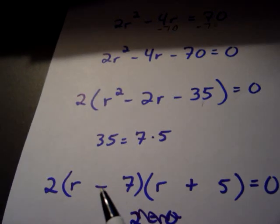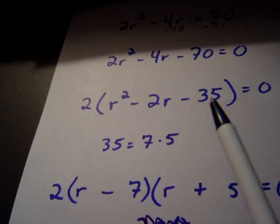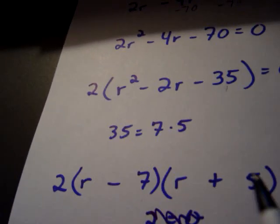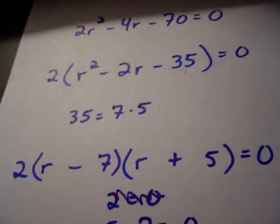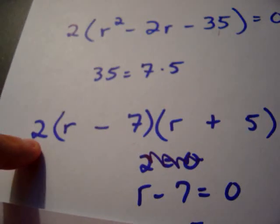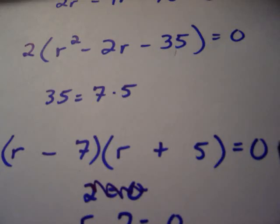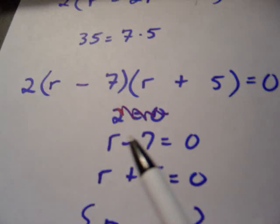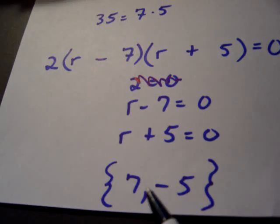You might ask how we decided which factor gets the negative and which gets the positive. The only way to get negative 35 is if one is negative and one is positive. To get negative 2 as the middle term, the larger absolute value must be negative, so the minus goes in front of the 7. Now, 2 here is not a variable, so we set r minus 7 equal to 0 or r plus 5 equal to 0. Solving both, the solution set is r equals 7 and r equals negative 5.